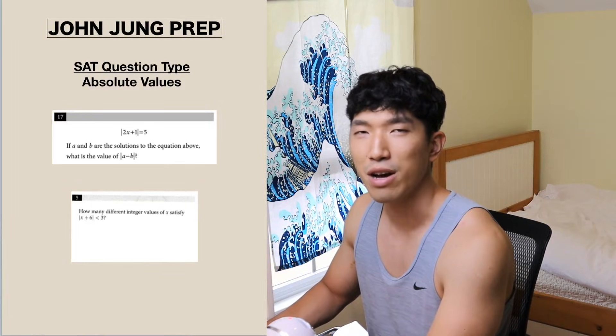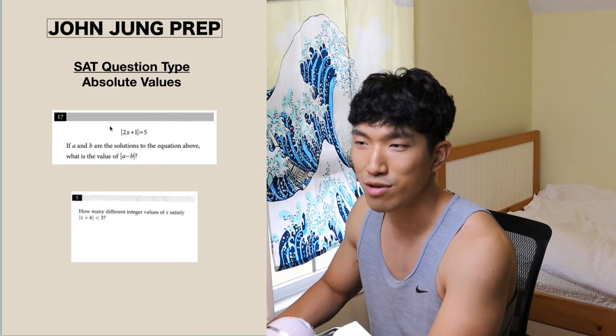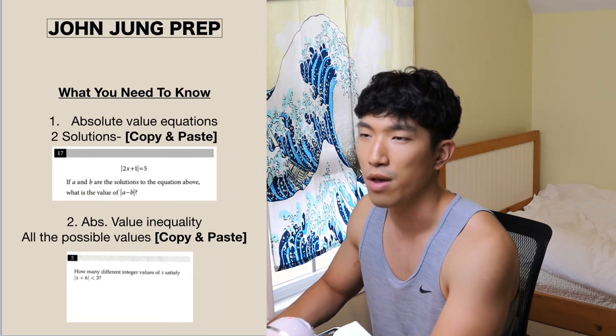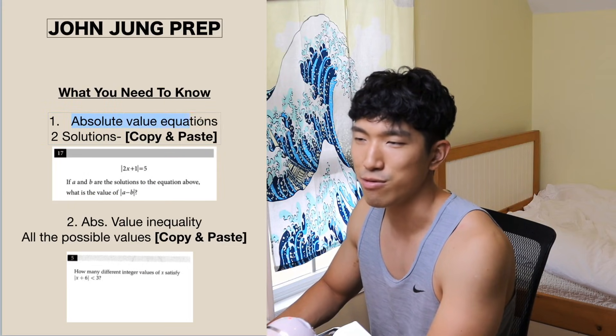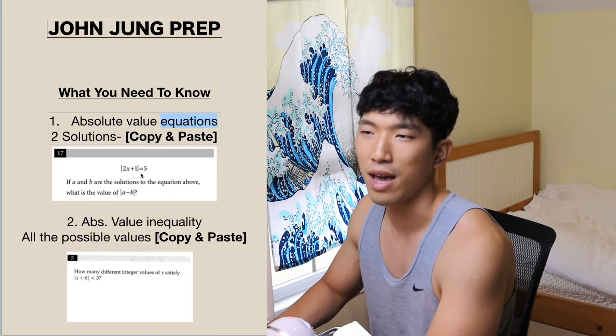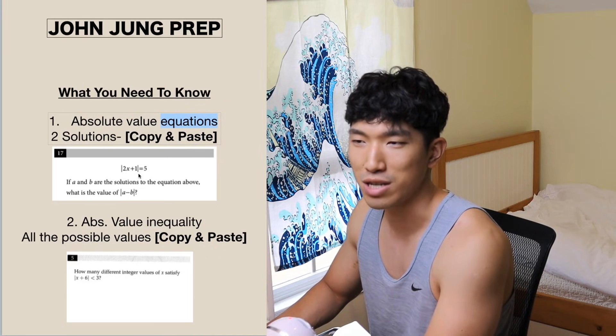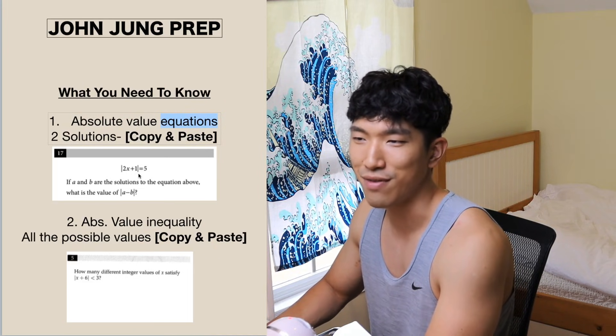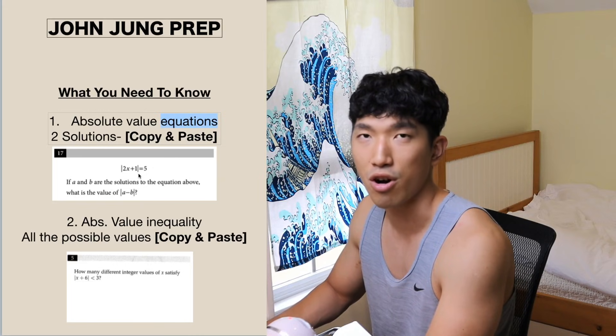Absolute value questions always have an absolute value in the question somewhere. See these little bars right here? That's an absolute value symbol. Anytime you see this, it's going to be an absolute value question, and there are going to be two types you need to know. The first one is going to be an absolute value equation — meaning there is going to be an equal sign — and you need to know how to find out exactly what the solutions are quickly.